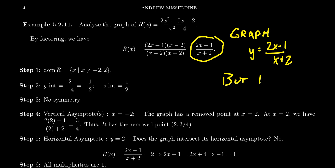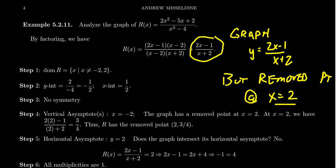For the rest of the problem, I'm going to graph the function y equals 2x minus 1 over x plus 2. But there's going to be a removed point at x equals 2, because the x minus 2 factor is what canceled out — it disappeared from the denominator. So we graph the simplified function but keep in mind this removed point at x equals 2.